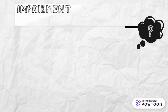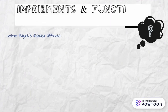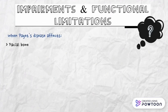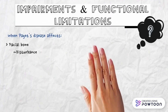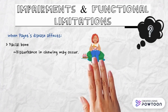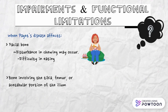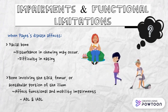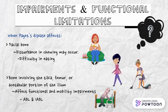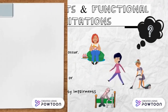When Paget's disease affects the facial bones, disturbance in chewing may occur and the person may have difficulty eating. If it affects bones involving the tibia, femur, or vestibular portion of the ileum, it will cause functional and mobility impairments.